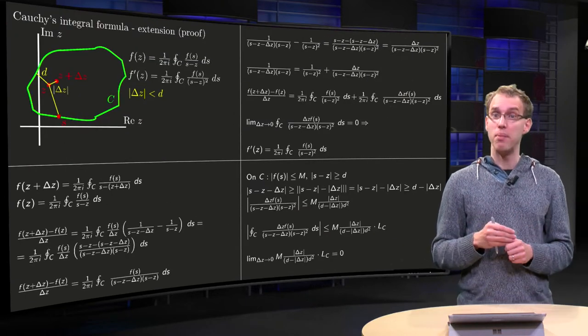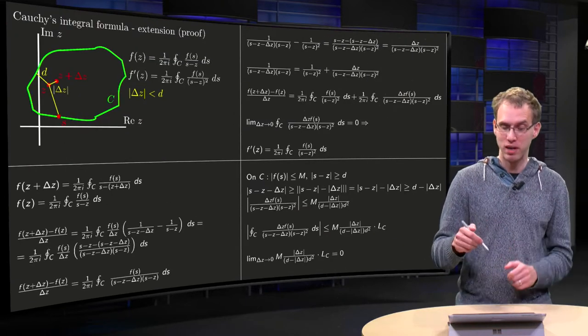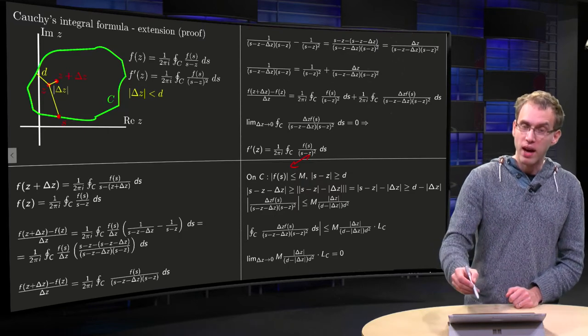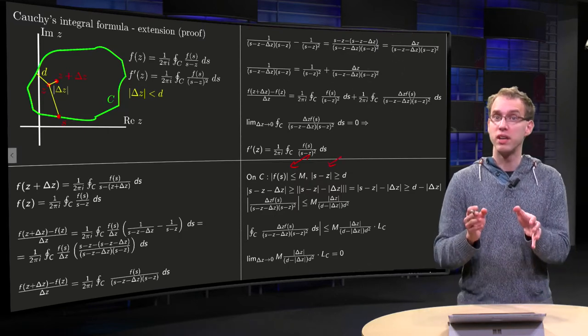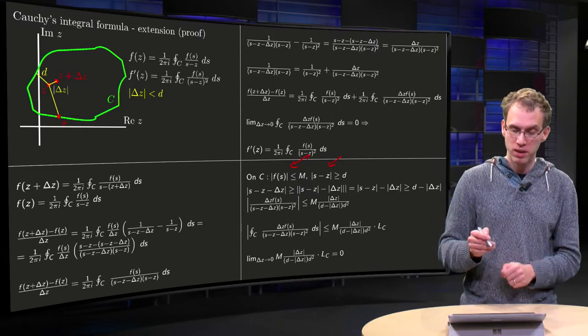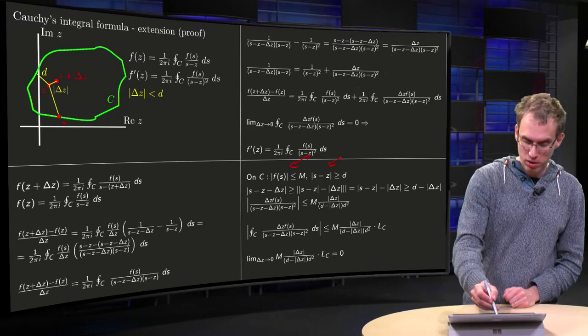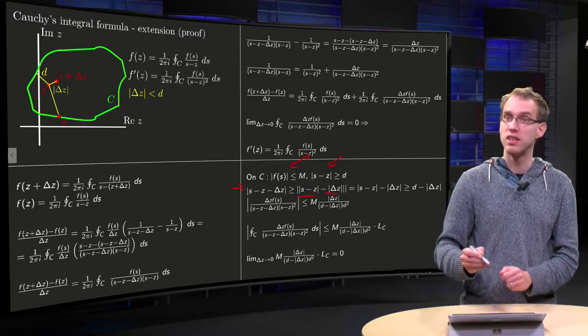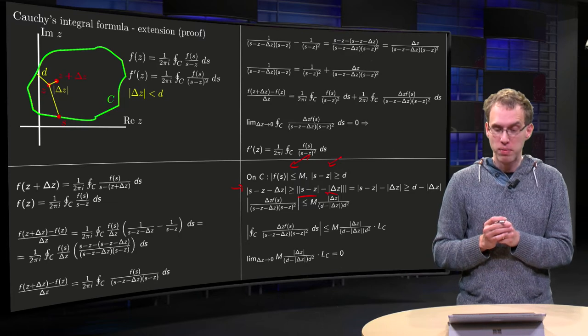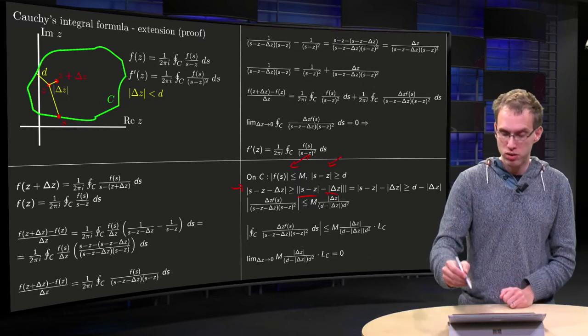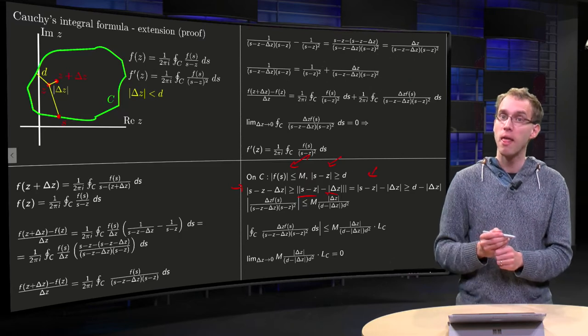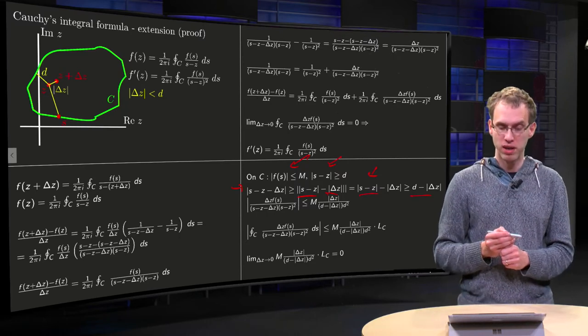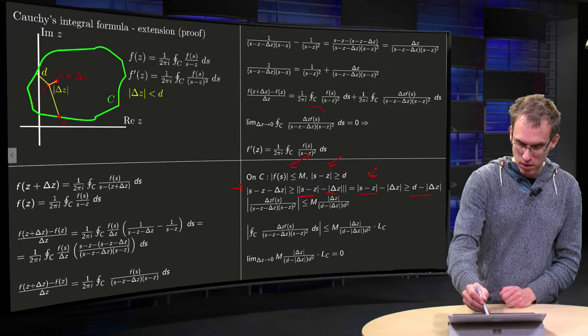And we will do that of course with an ML estimate, as you would probably expect already. Because on C your f is continuous, so it is bounded by some M, and the norm of s minus z is bigger or equal than d, because you are at least d away from the boundary. So you can use inverse triangle inequality for the norm of s minus z minus delta z, and the norm of s minus z is at least d, so the first term is bigger than the second term, so you can get rid of the absolute value signs over here. And then here this is at least d, so you get bigger or equal than d minus norm of delta z. So you can estimate the function over here, as the f estimated by M.